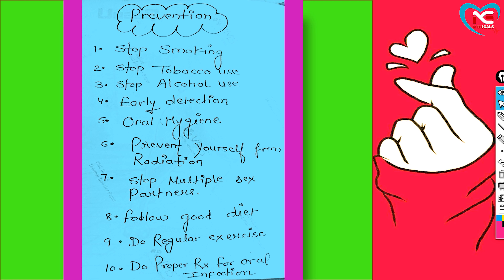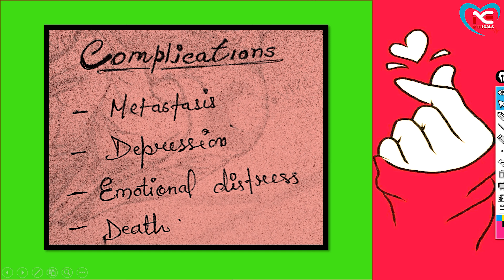Prevention: strictly prohibit tobacco, alcohol, and smoking. Advise avoiding prolonged sun exposure. Focus on early detection, especially with family history of cancer. Maintain oral hygiene. Avoid multiple sexual partners or oral sex to prevent HPV transmission. Follow a good diet to keep the immune system strong. Exercise regularly to keep the body healthy. Treat any oral infections promptly.